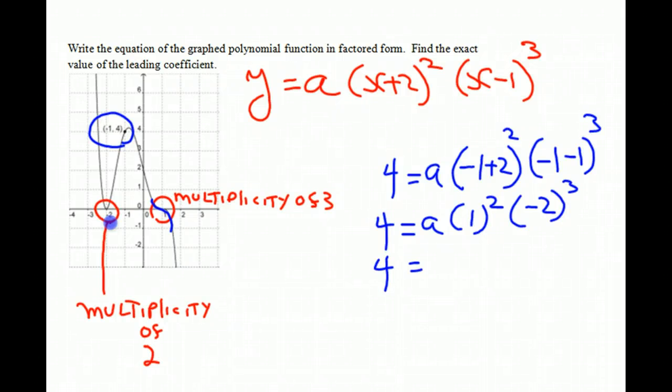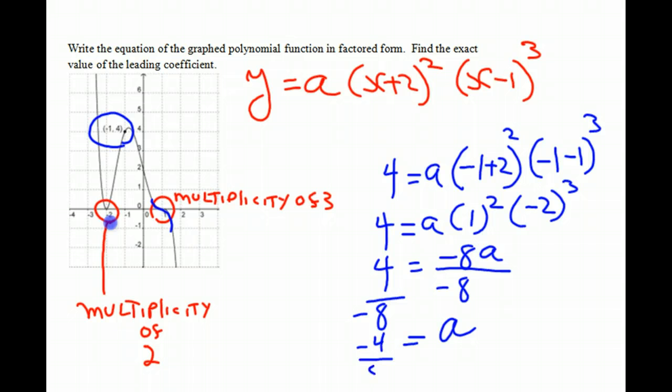1 squared is 1, and negative 2 times negative 2 times negative 2 is negative 8. So we get negative 8a is equal to 4. Divide both sides by negative 8. We get a is equal to negative 4 eighths, which if we reduce is negative 1 half.